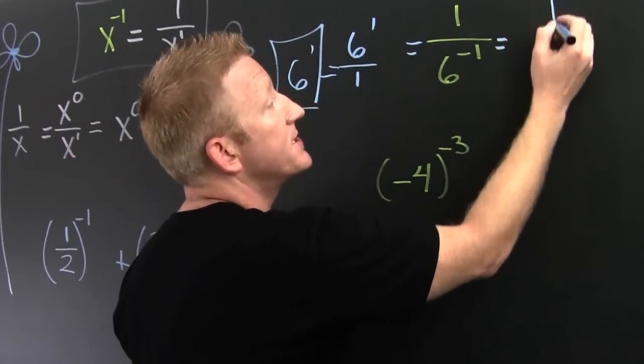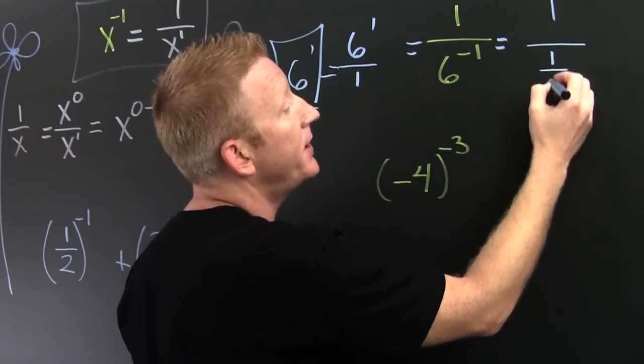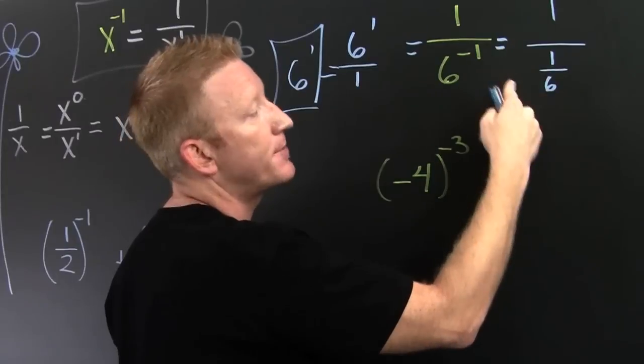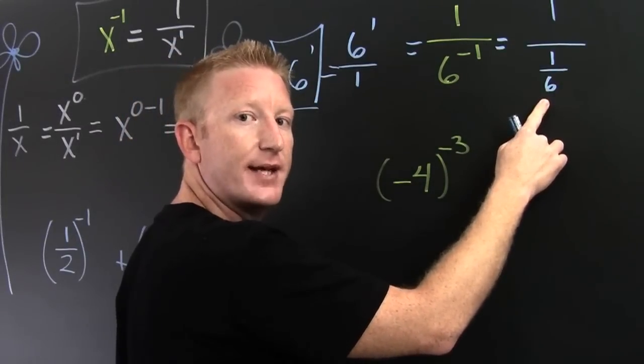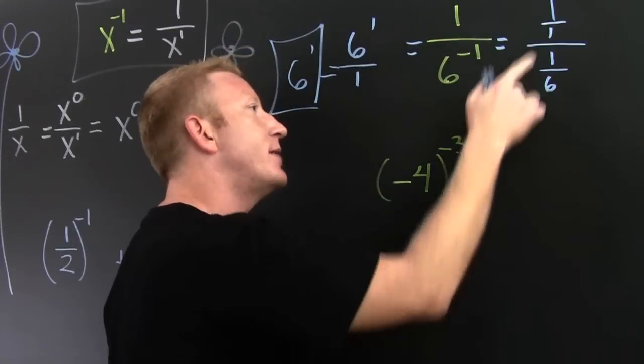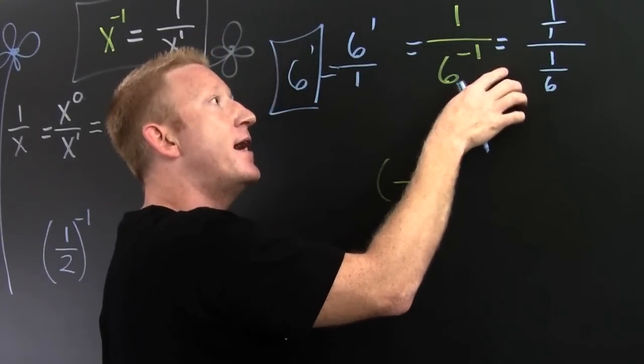But maybe you want to say this is 1 over 1 over 6. Because that negative exponent drops that into its own numerator. Here I have a complex fraction. That's where the numerator has a numerator and the denominator has a numerator.